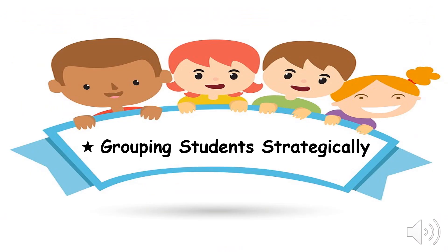Teachers can strategically group students for peer tutoring. Students can be grouped homogeneously, meaning all students in the group have similar skills and levels of learning, or students can be grouped heterogeneously, meaning students within the group have different skills and levels of learning. Heterogeneous groups may include students with disabilities and students without disabilities together. The teacher groups students strategically based on goals intended to be achieved, and this can be determined prior to the lesson by collaborating with special education teachers, general education teachers, counselors, administration, students, and librarians.